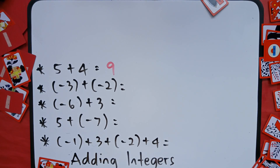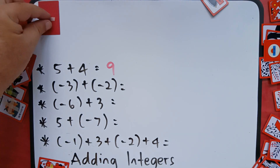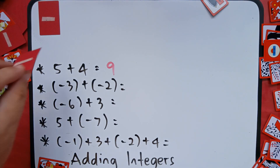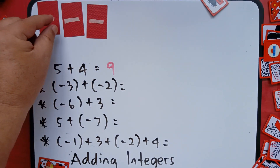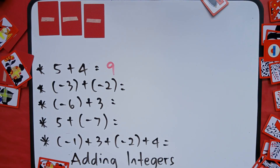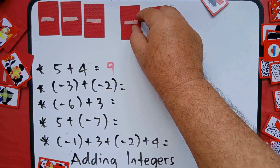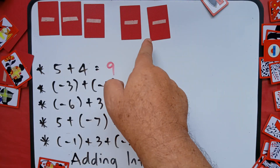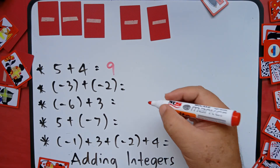Next: negative three plus negative two. Negative three — we have negative three tiles. Sometimes I say tile, sometimes I say card; anyway, they're just the same. Negative three plus negative two — what is the total? We have negative five tiles.